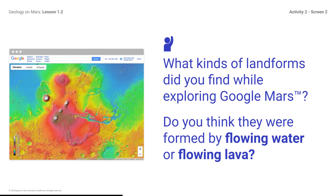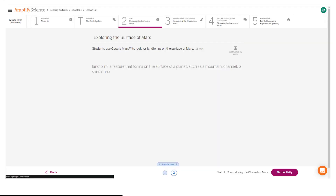What kind of landforms did you find while exploring Google Mars? Do you think they were formed by flowing water or flowing lava? Students, describe to others what you found while exploring if you can. Here is what your student screen looks like for this part of the lesson.